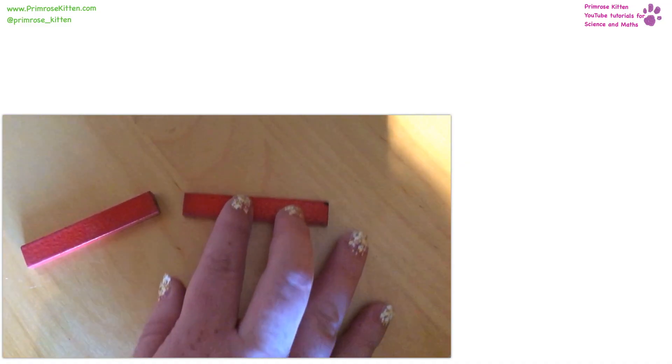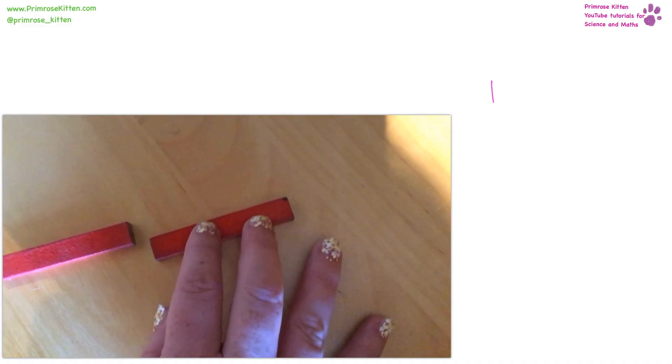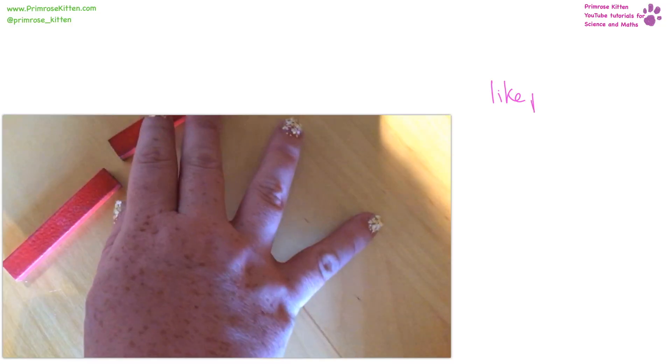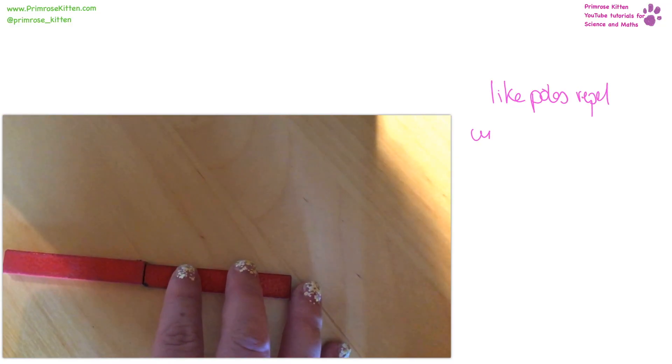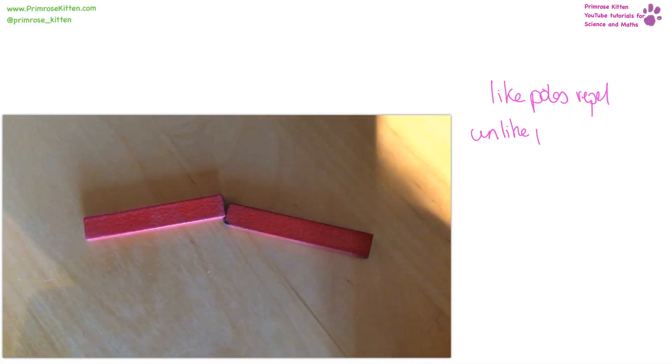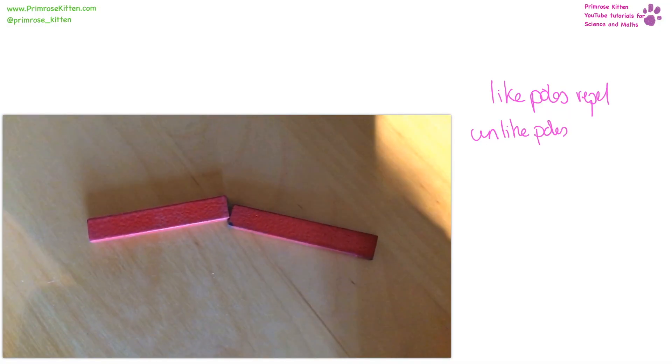When we have two like poles, they're going to repel. But when we have two unlike poles, they're going to attract.